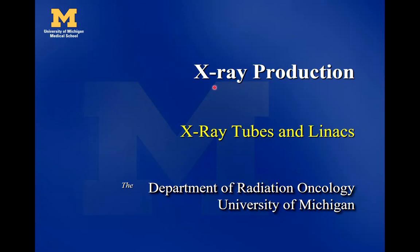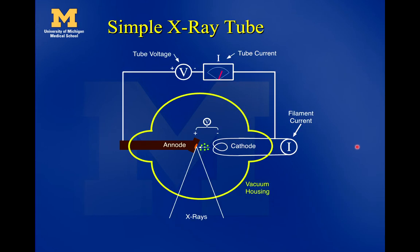In this video we're going to continue and talk about x-ray production. We're going to look at some simple x-ray tubes in linacs. We're mostly going to focus on the x-ray production and not the functioning of these different systems. Here's a diagram of a very simple x-ray tube, and we're going to run through the different parts of it and how this works.